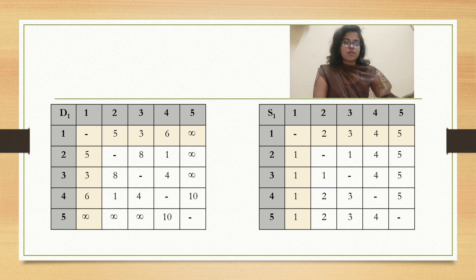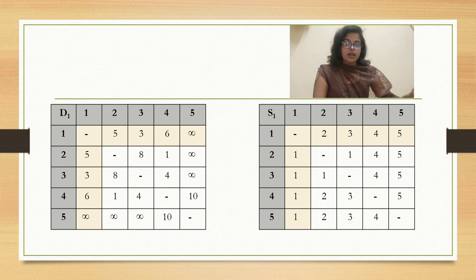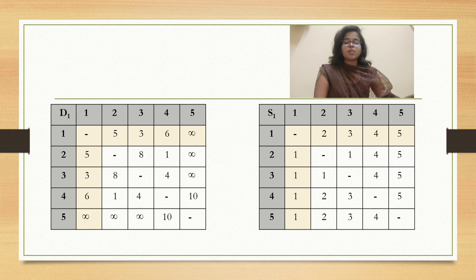Now we will look at the S1 matrix. There is a change for D23 and D32 — the value changed from infinity to 8. So we will change the corresponding entries in the S matrix as well. Since it is the first iteration, the entries will change to 1. So S23 will be 1, because D23 changed from infinity to 8. Similarly, S32 will be 1. There is no change in any other entry, so it will be kept as such.